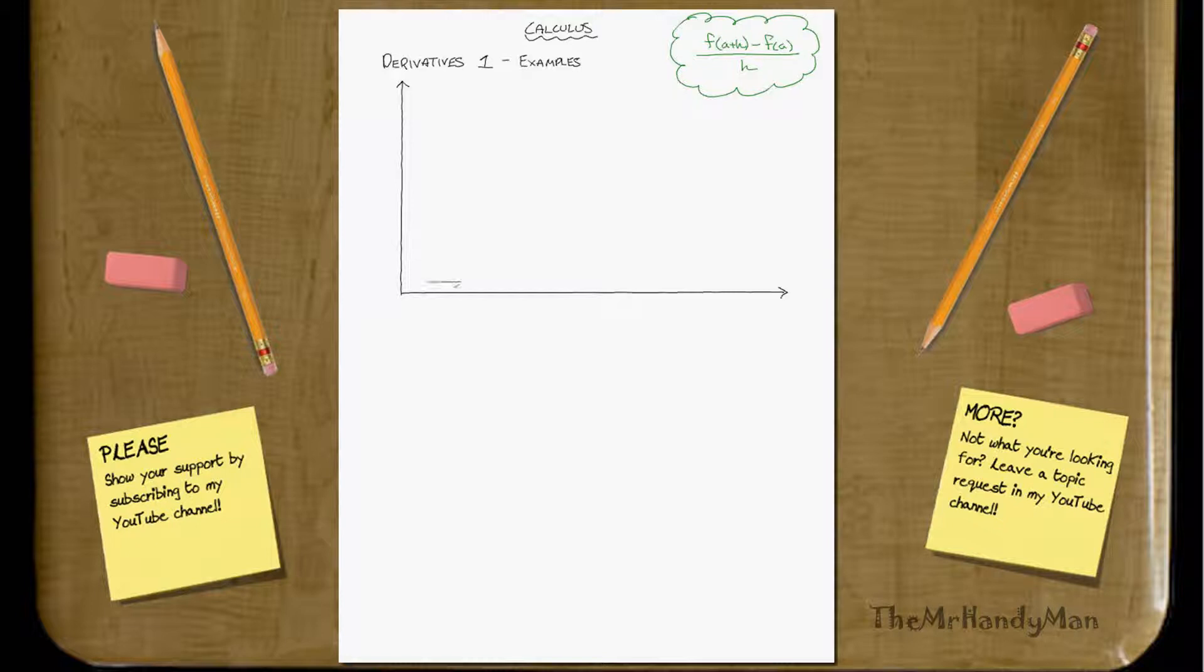So right now I'm going to draw just an arbitrary curve so that we can see it. And I'm going to pick our point of interest, which will be here, a.